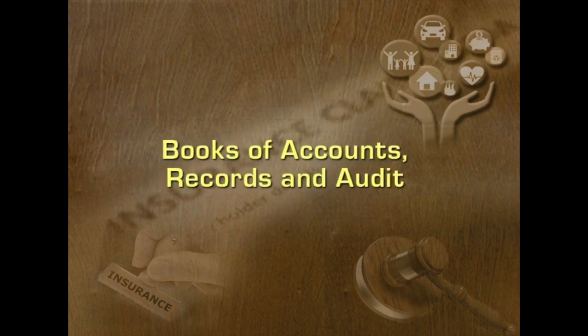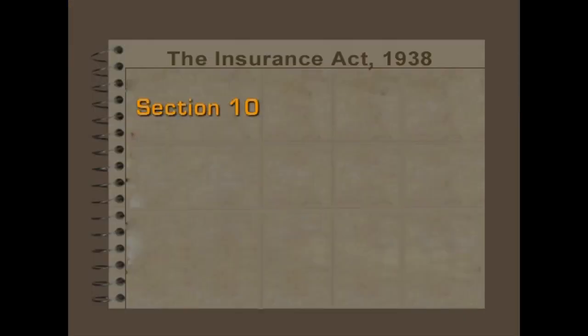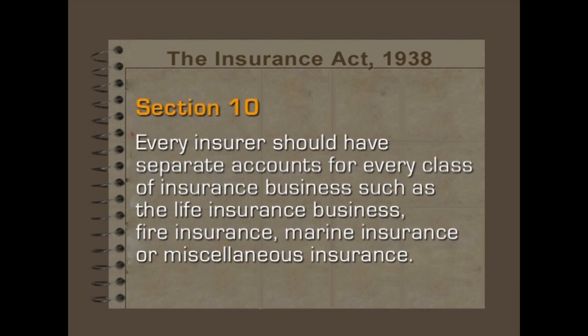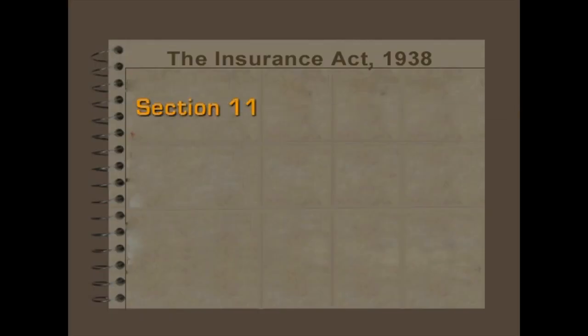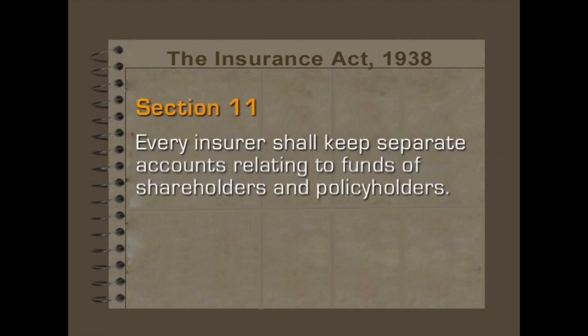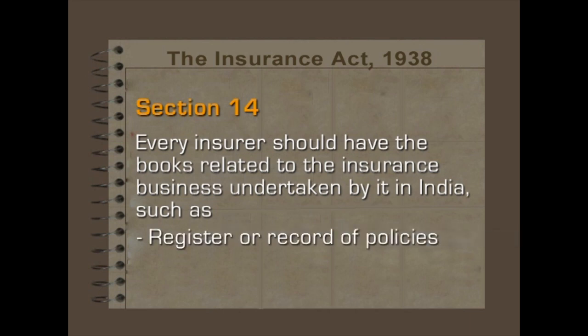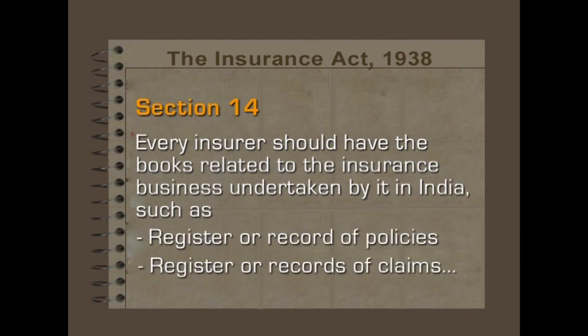Section 10 of the Insurance Act 1938 states that every insurer should have separate accounts for every class of insurance business such as life insurance business, fire insurance, marine insurance or miscellaneous insurance. The regulations prescribe the records and books which are to be maintained by the insurance company. Section 11 of the Insurance Act says that every insurer shall keep separate accounts relating to the funds of shareholders and policyholders. Section 14 of the Act says that every insurer should have the books related to the insurance business undertaken by it in India, such as register or record of policies, register or records of claims, and so on.